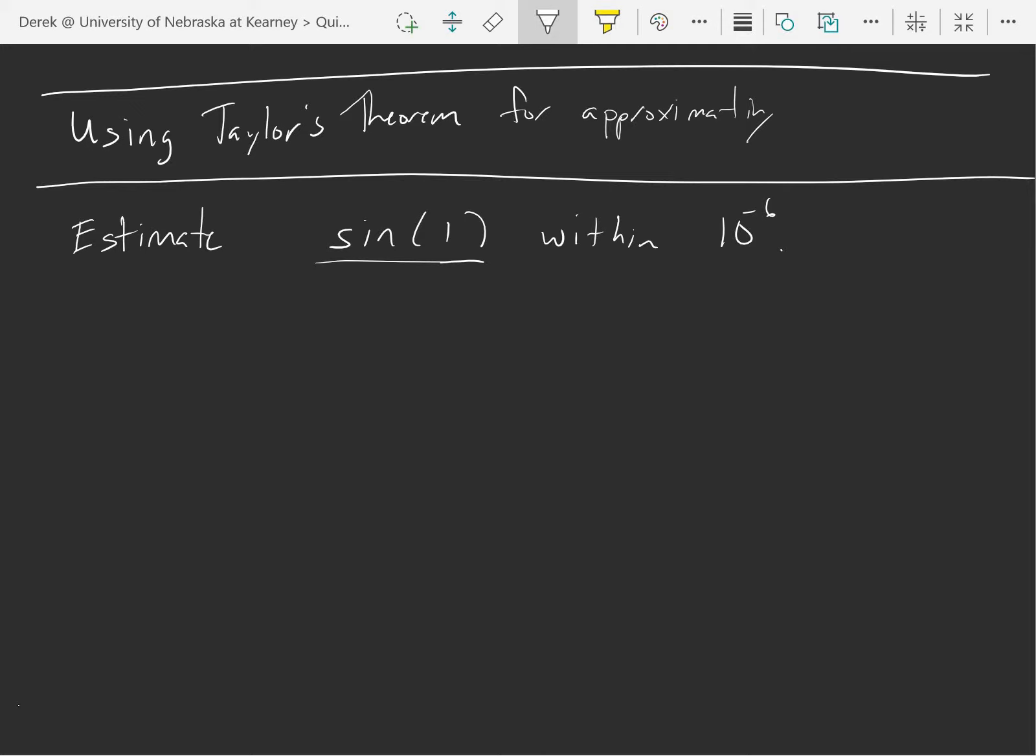So we should pick some number that I can center it at where I can evaluate the sine at that number and the derivatives of the sine, like the cosine, at that number too. So I'm going to center my Taylor series at zero.